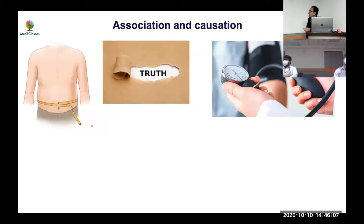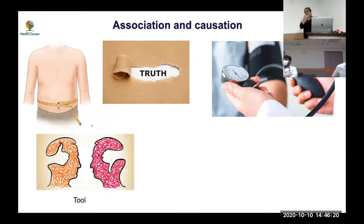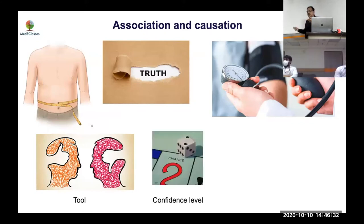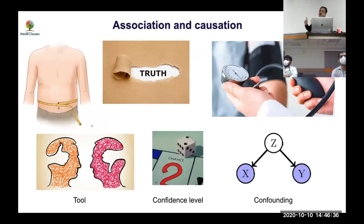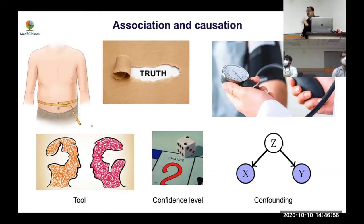To settle between association and causation, consider multiple factors. If obesity is linked with hypertension, it could be a true cause, or there could be systematic error in how you measure obesity or blood pressure, or it could be chance. Most importantly, there could be confounders — obese children may eat more salt, and that salt causes hypertension, making obesity not the direct cause.